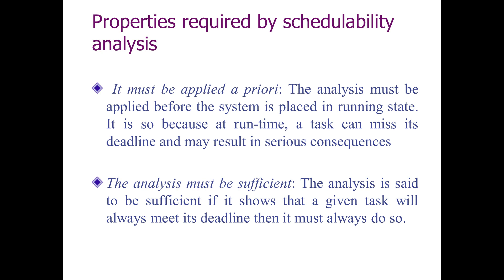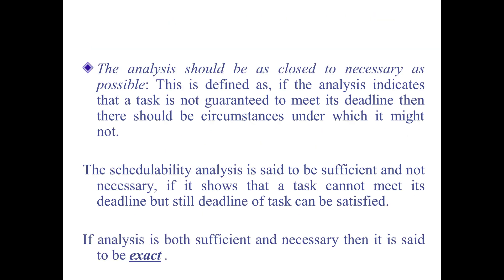There are three properties required by schedulability analysis. First, the analysis must be applied a priori — before the system is placed in a running state — because at run time a task missing its deadline can result in serious consequences in hard real-time systems. Second, the analysis must be sufficient: if it shows that a task will always meet its deadline, it must always do so. Third, the analysis should be as close to necessary as possible, meaning if it indicates a task is not guaranteed to meet its deadline, there should be circumstances under which it might not.